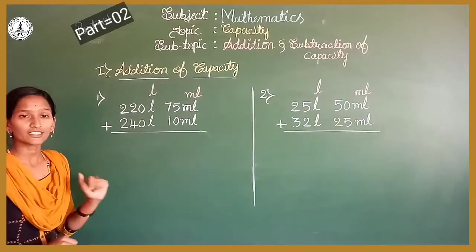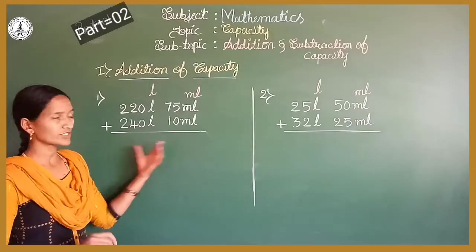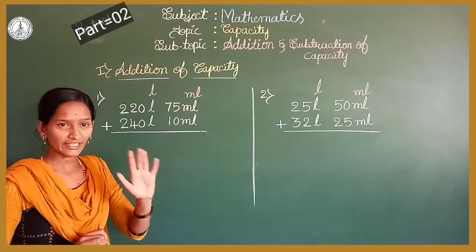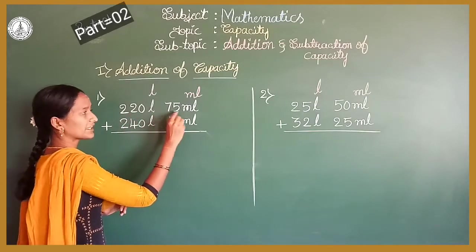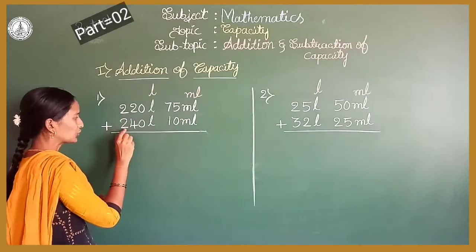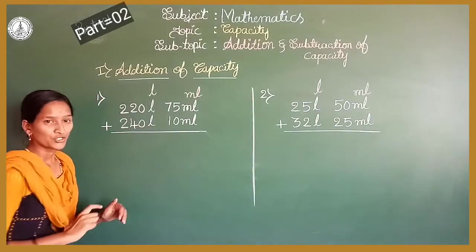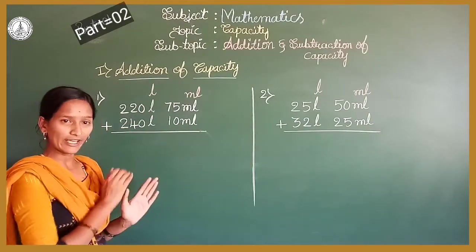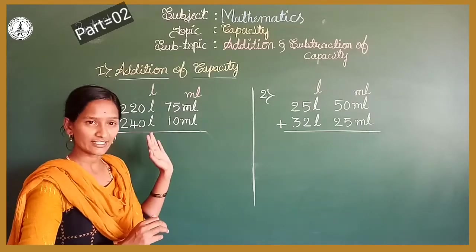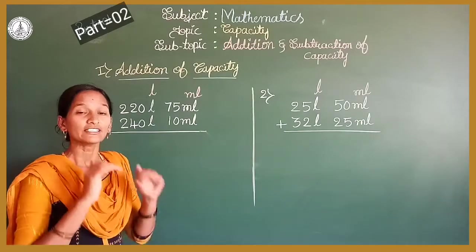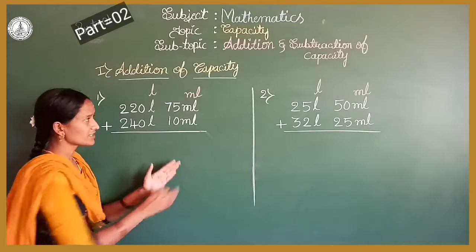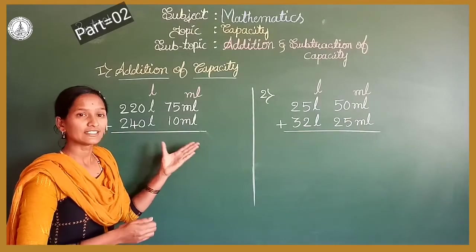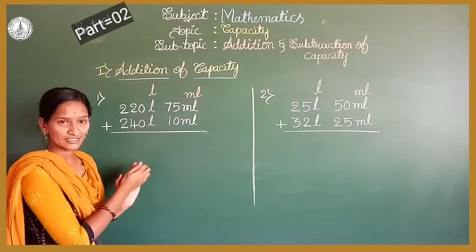Look here. This is the first concept: addition of capacity. In this first problem, they gave values in litres as well as in millilitres. It is 220 litres 75 millilitres plus 240 litres 10 millilitres. You have to add these two. We add numbers from right to left — ones, then tens, then hundreds. In the same way, you have to add the millilitre part first, then the litre part.